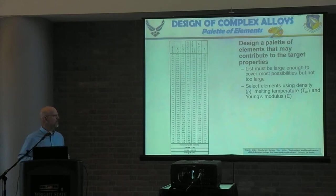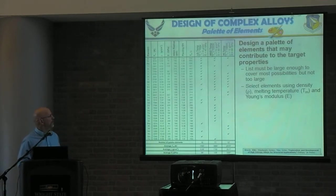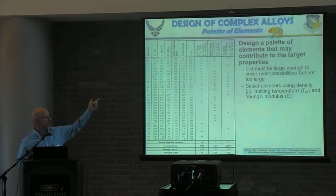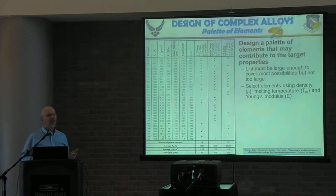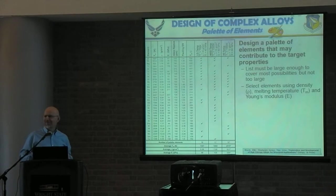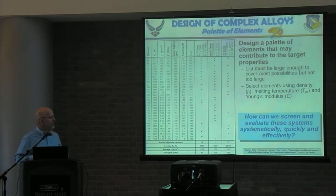We select elements from this list based on their density and melting temperature, consistent with three different material families. So we have a low temperature palette, a medium temperature palette, and a high temperature palette. Now instead of 43 elements, we have a dozen or a dozen and a half, and the numbers become much more tractable — a few thousand to tens of thousands of compositionally complex alloys per palette. This is a very different way of thinking in the materials development community. One of our colleagues emailed saying, 'Damn, the numbers scare me.'